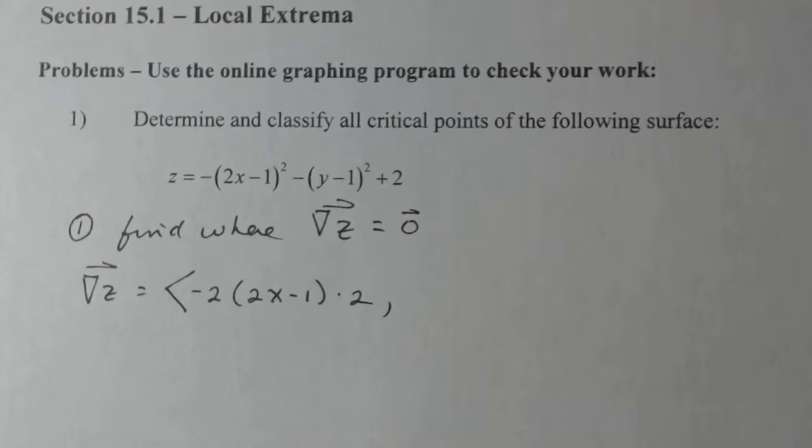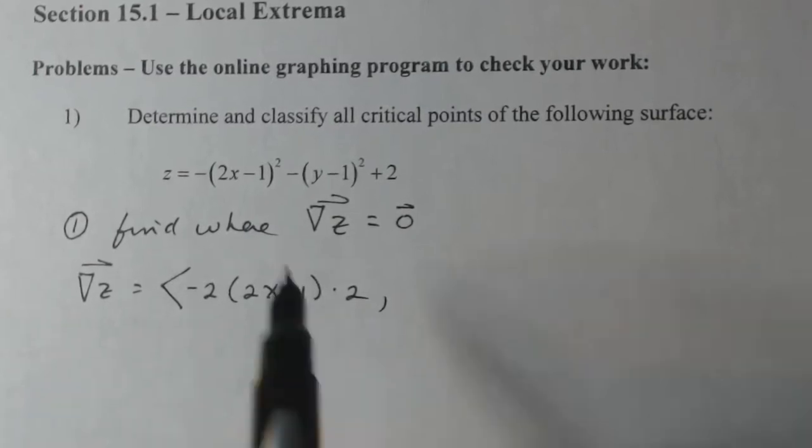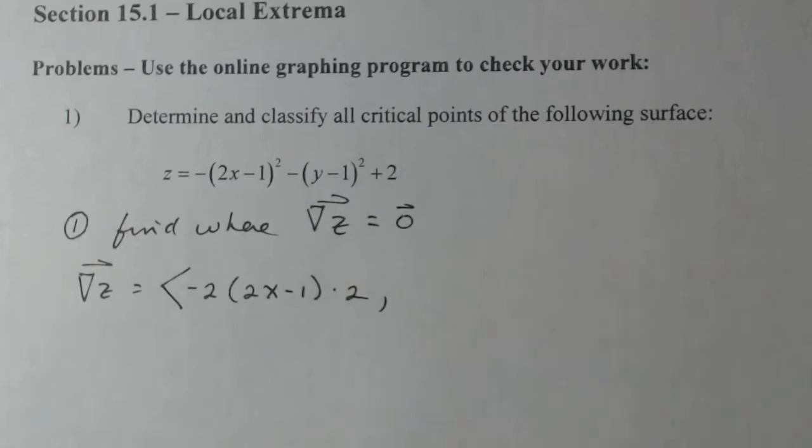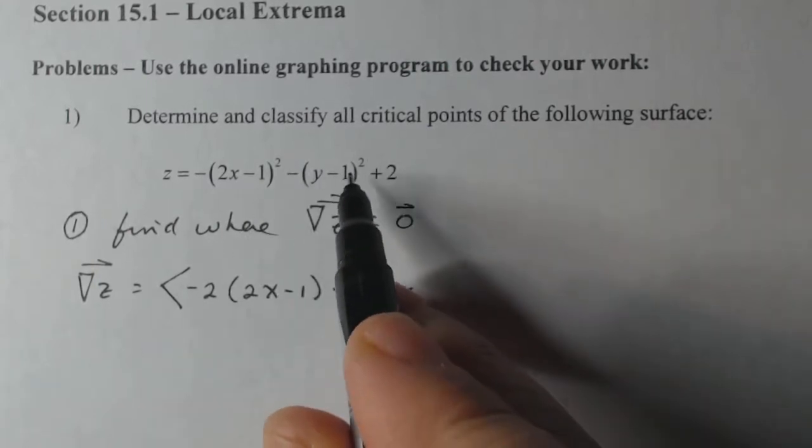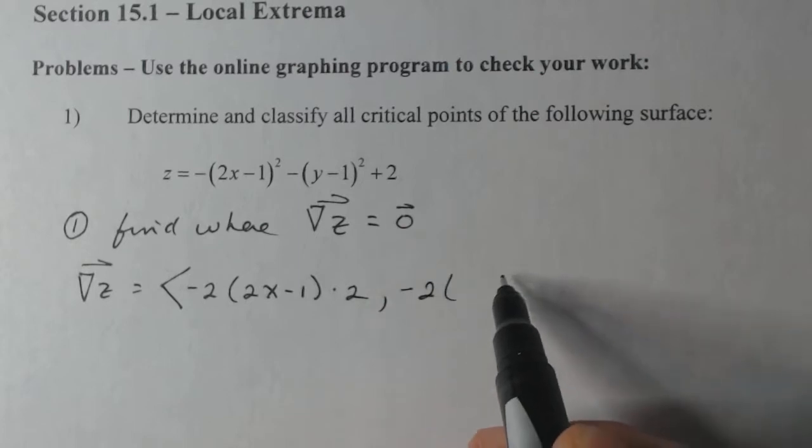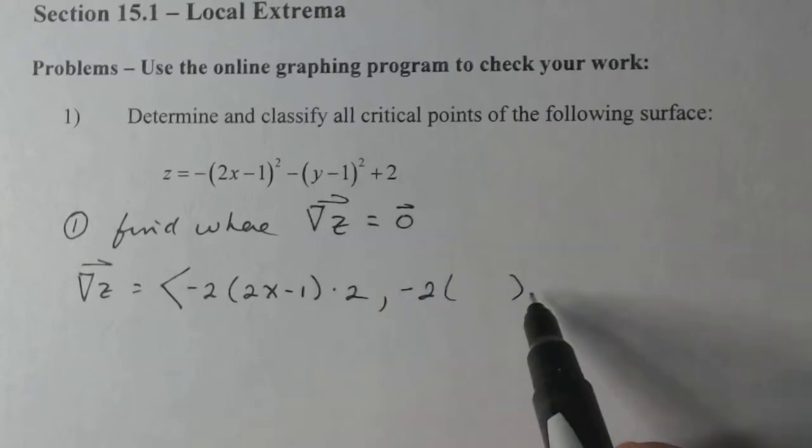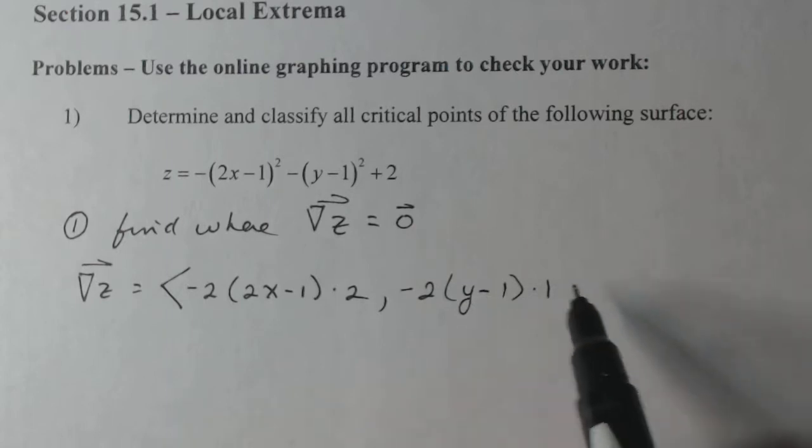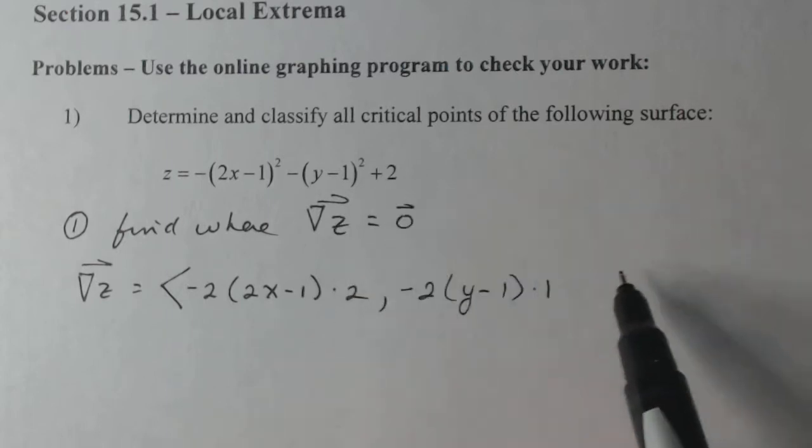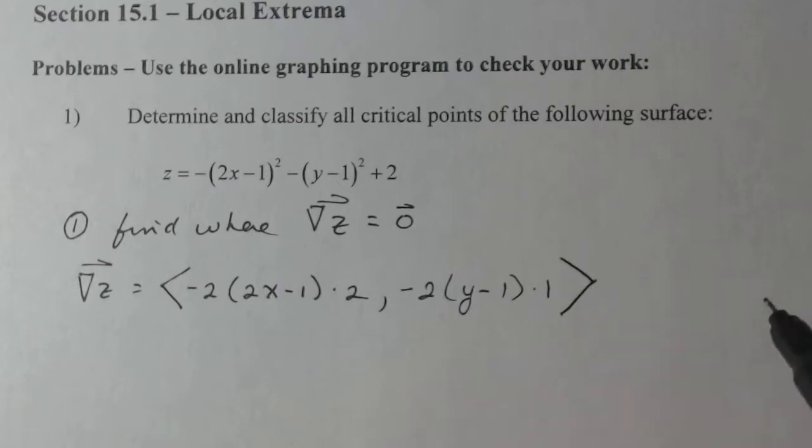Now z sub y, since this only has x's in it, that term will be zero. So I take the derivative of this piece. I bring down that two and take the derivative of the inside, and I leave the inside the same. The derivative of two is also zero, so that's going to be z sub y. So that's my gradient.